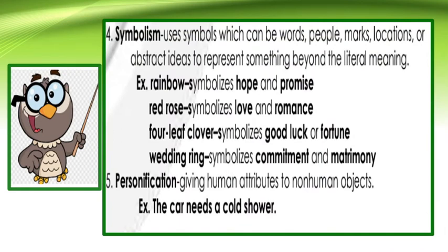Fourth, we have symbolism. Symbolism uses symbols — which can be words, people, marks, locations, or abstract ideas — to represent something beyond the literal meaning. For example, a rainbow could symbolize hope and promise. A red rose can mean love and romance. A four-leaf clover sometimes symbolizes good luck or fortune. And a wedding ring can symbolize commitment and matrimony.